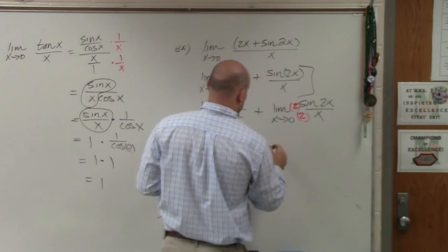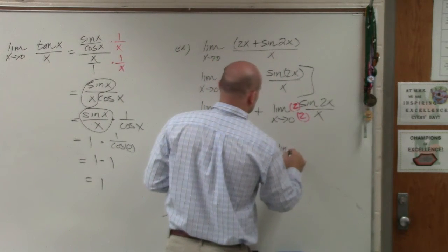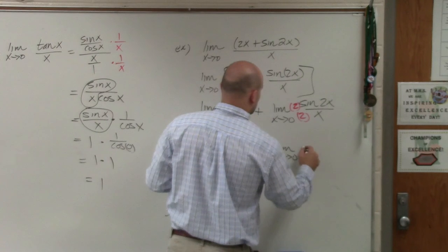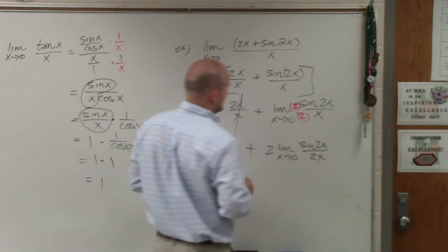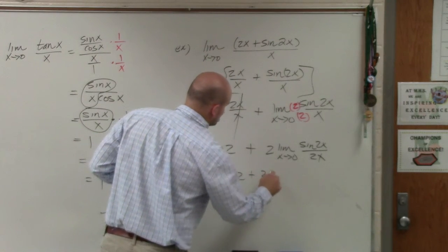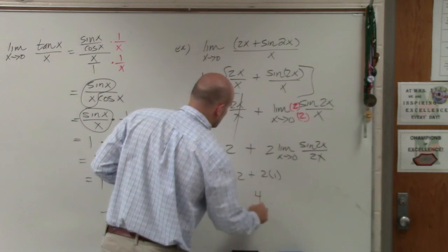Take that 2 out. I'm left with 2 times the limit as x approaches 0 of sine of 2x over 2x, which is 2 plus 2 times 1, which equals 4.